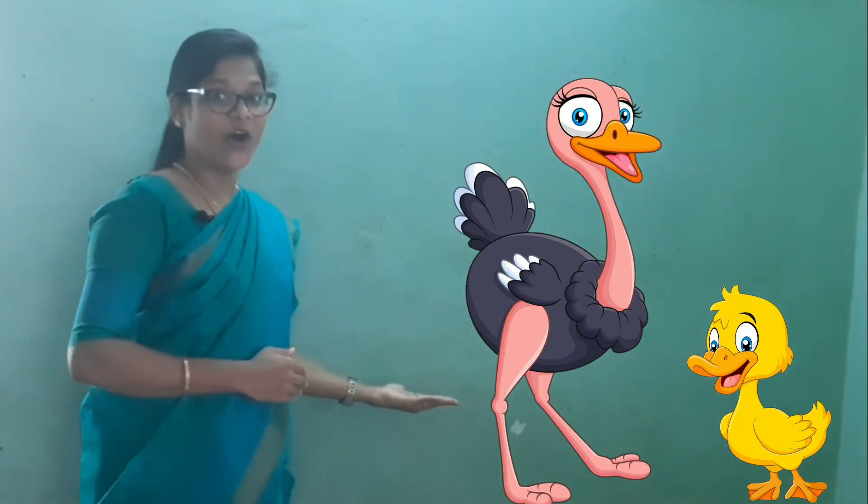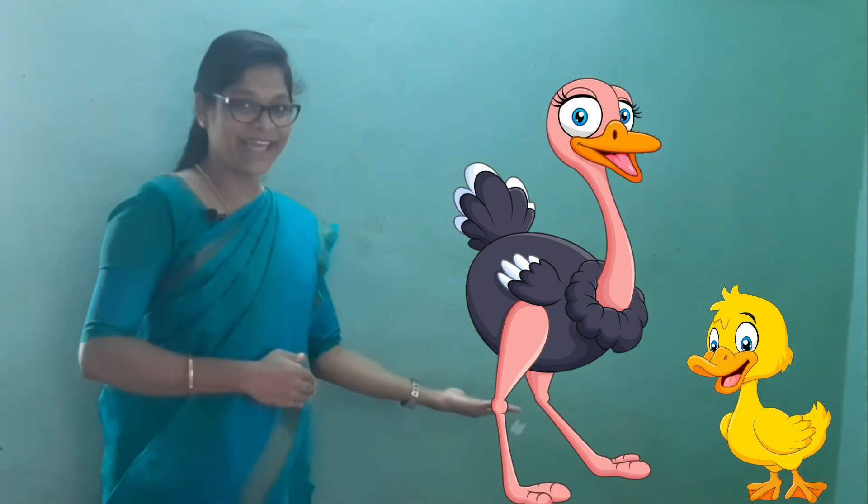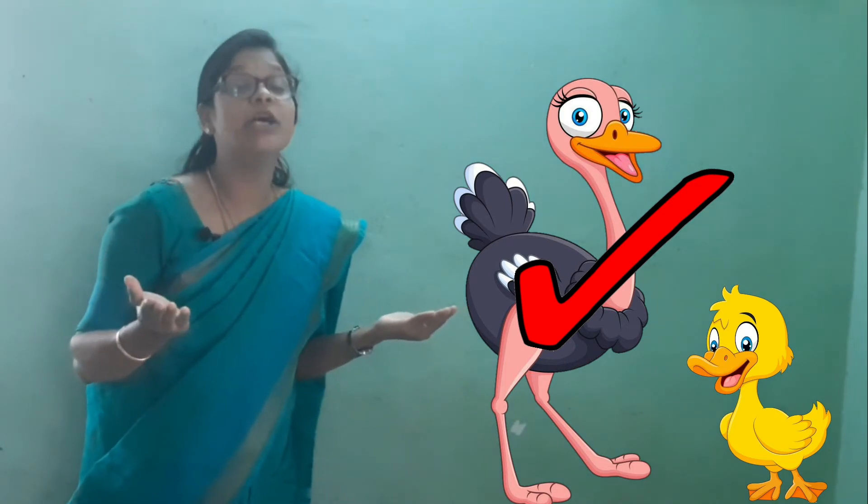There are two birds in the picture. Which bird is tall and which bird is short? Ostrich is tall and the duck is short. Very good! So which bird will you tick, my dear kids? Which is tall? Very good — ostrich is tall. Very good kids, you have identified correctly!